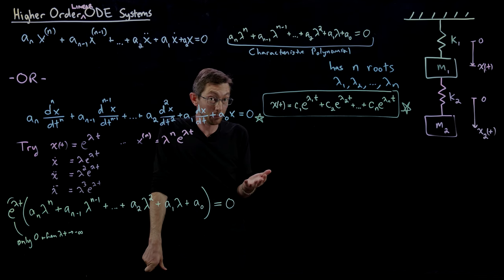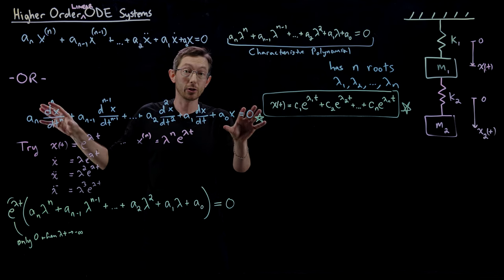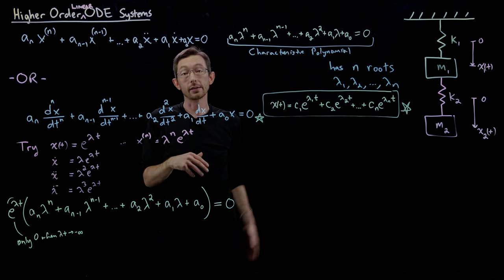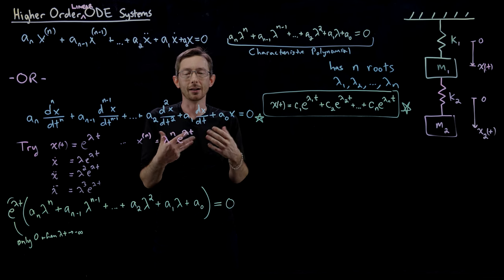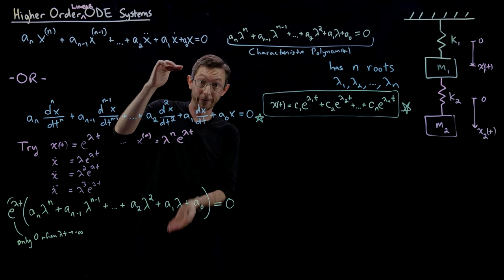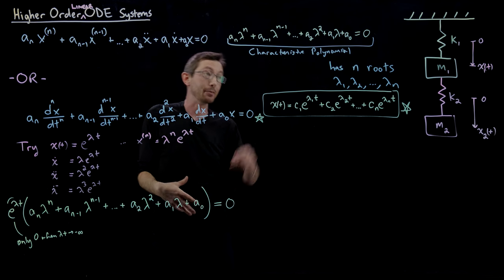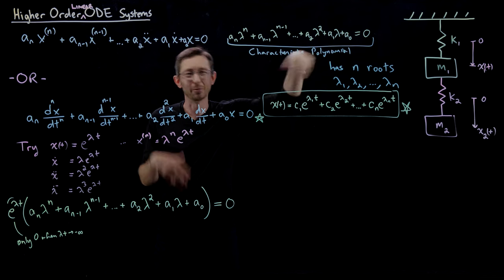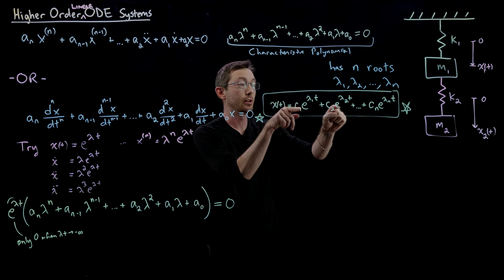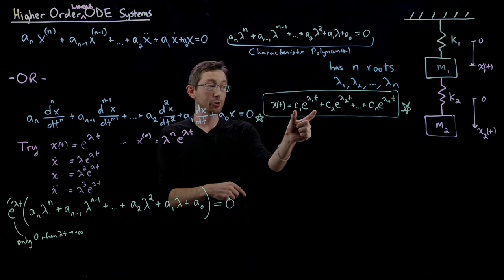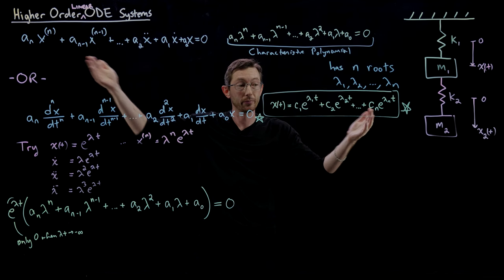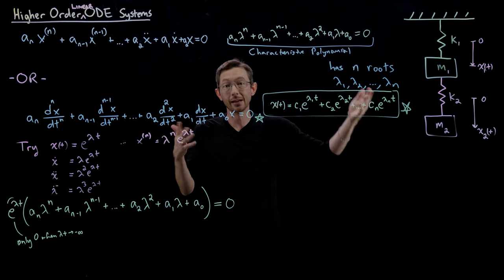This is my generic solution of a higher-order ordinary differential equation. Any high-order ODE you can write down in terms of nth derivatives of some state x — you can write down its characteristic polynomial, solve for the roots of that polynomial (numerically, or as I'll show you in the next lecture, using eigenvalues). However you do it, you find these λs and your generic solution is a linear combination of all of those e^(λt) terms.